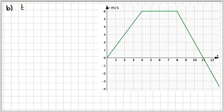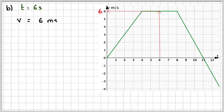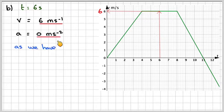So when T is equal to 6, which is this point here, the velocity will be equal to 6. Now we can see we have a horizontal straight line here, so we know the gradient is equal to 0. So A is 0 meters per second, i.e. no acceleration at this particular point.